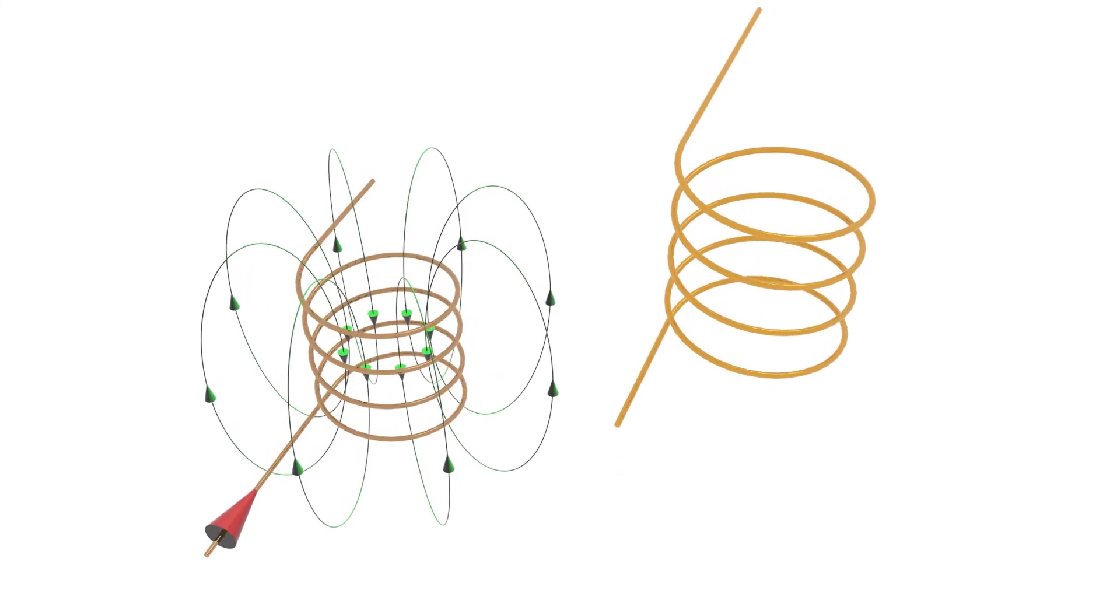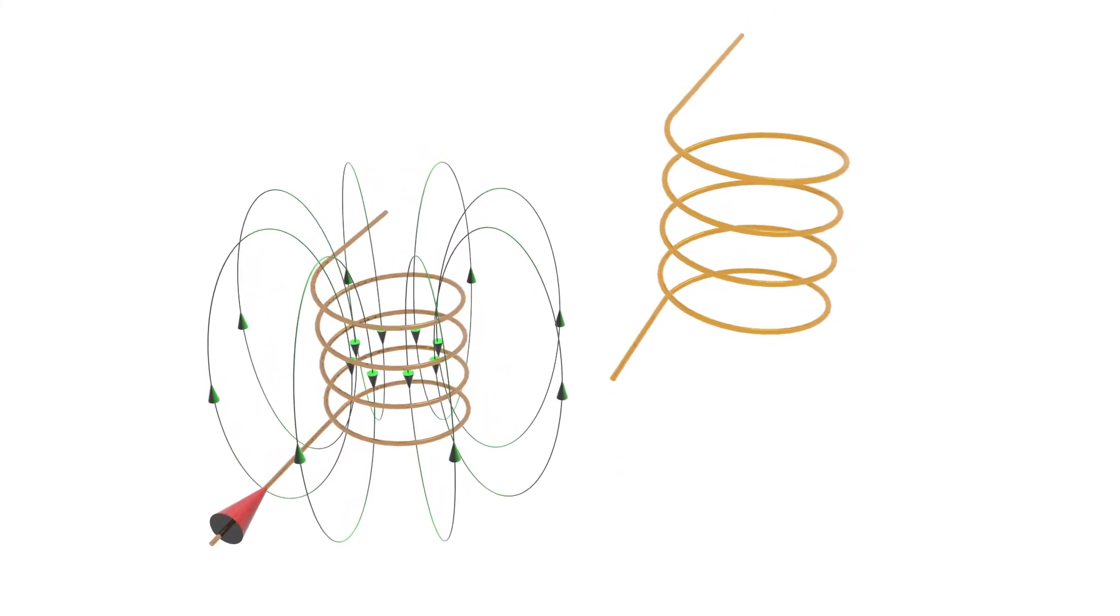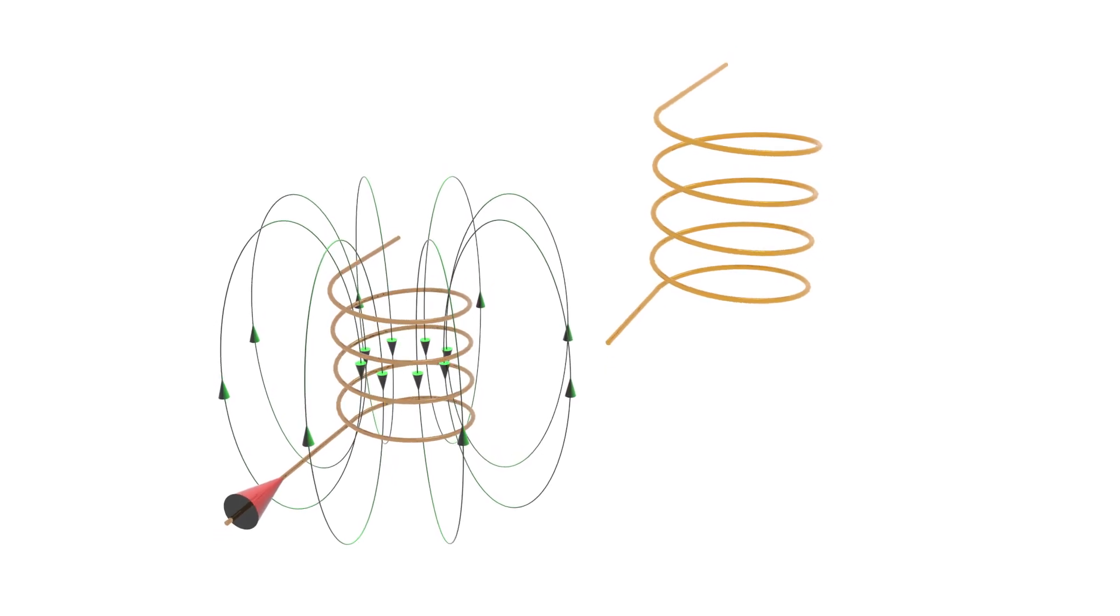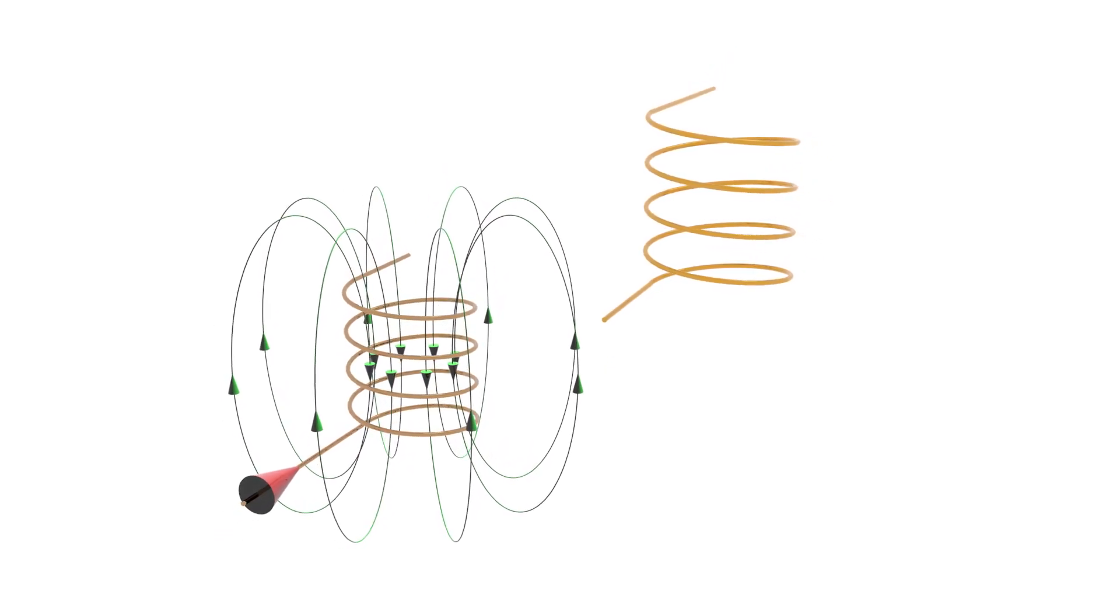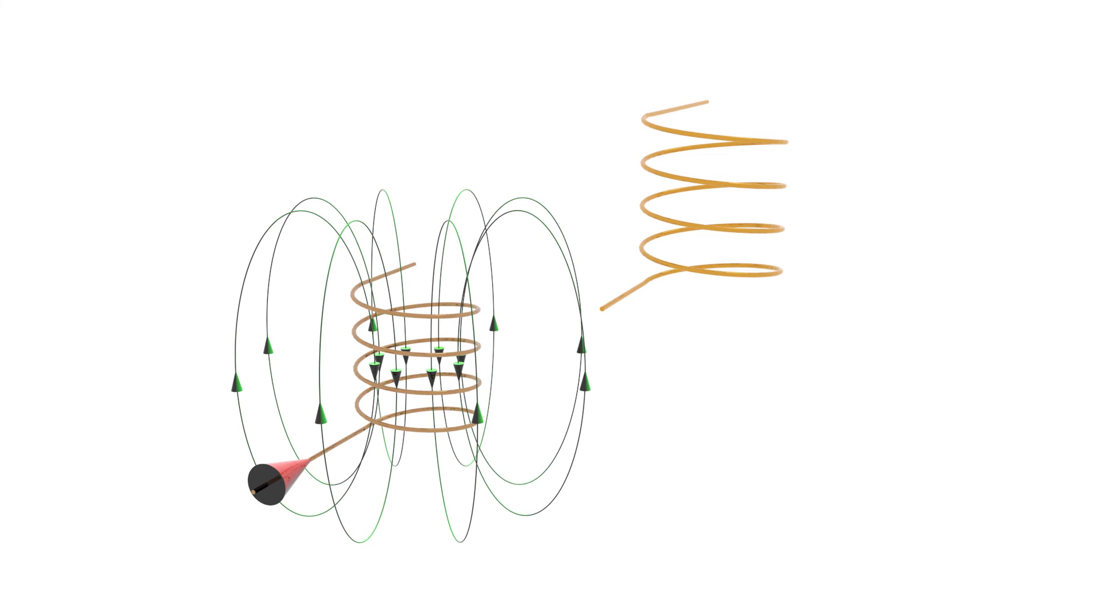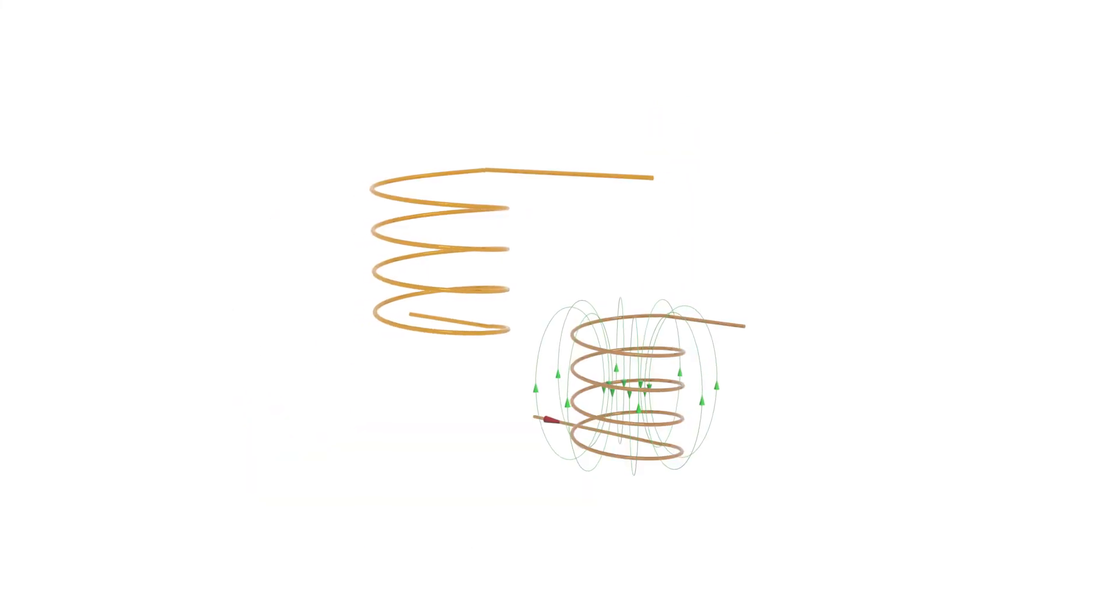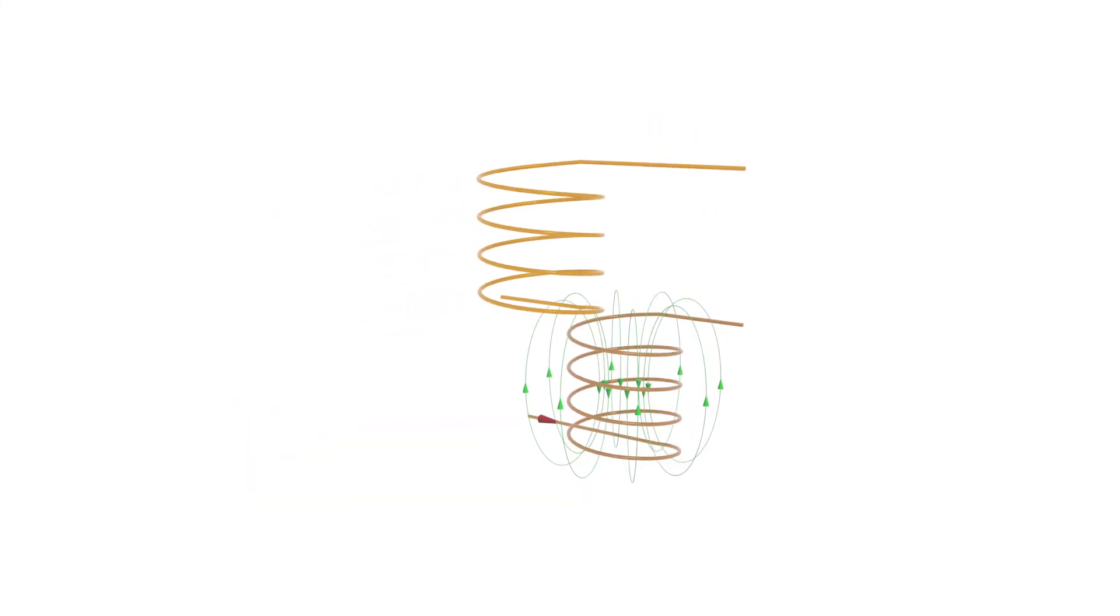Let's consider two inductors. A variable electric current is established in what we will call the old inductor. This inductor is generating a strong variable magnetic flux. If this magnetic flux passes through the new inductor, a voltage will be induced in it.